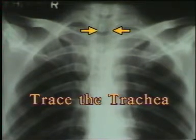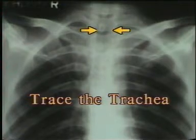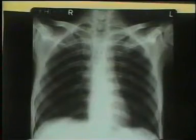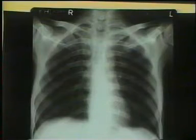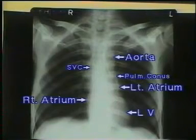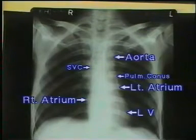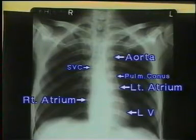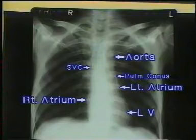This completes the inspection of the lung fields. Now inspect the cardiac silhouette. First study the cardiac border and measure the cardiothoracic ratio for cardiac enlargement. The left cardiac border is made of the aorta, pulmonary conus, left atrial appendage and the left ventricle. The right cardiac border is composed of the superior vena cava and the right atrium.